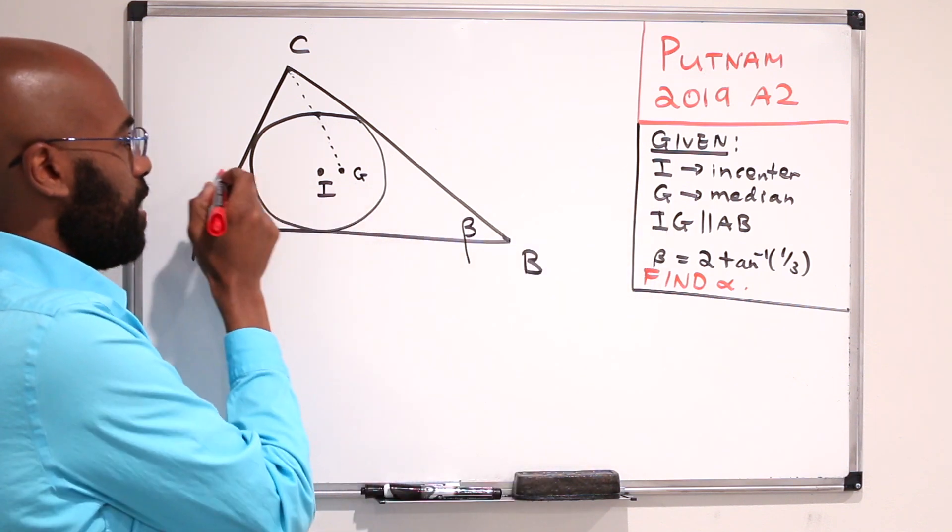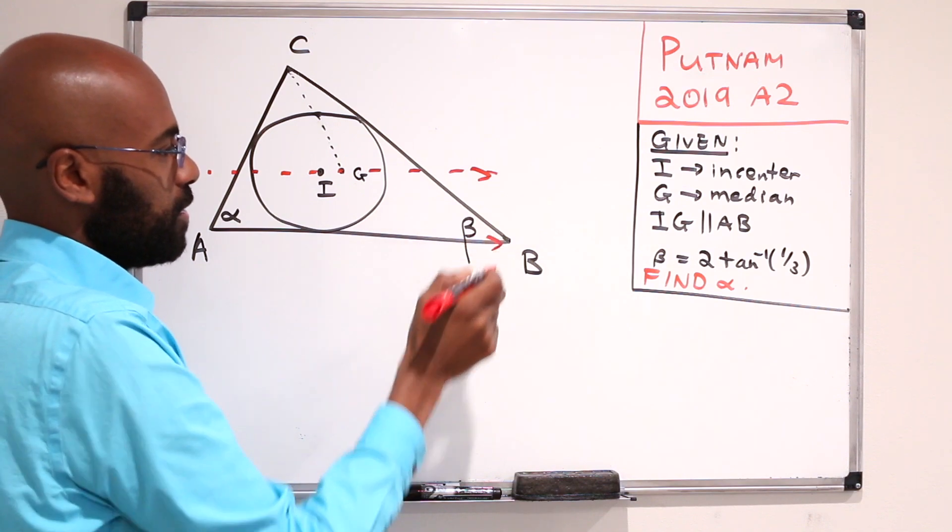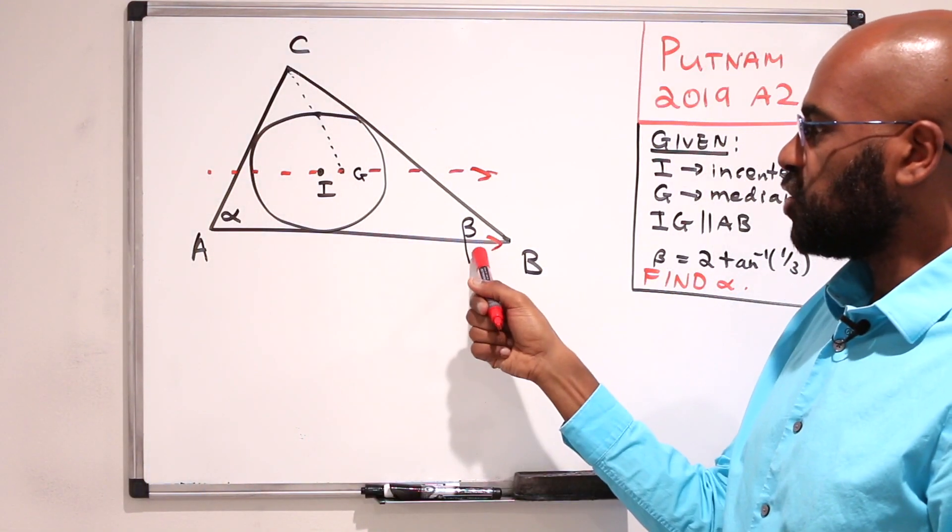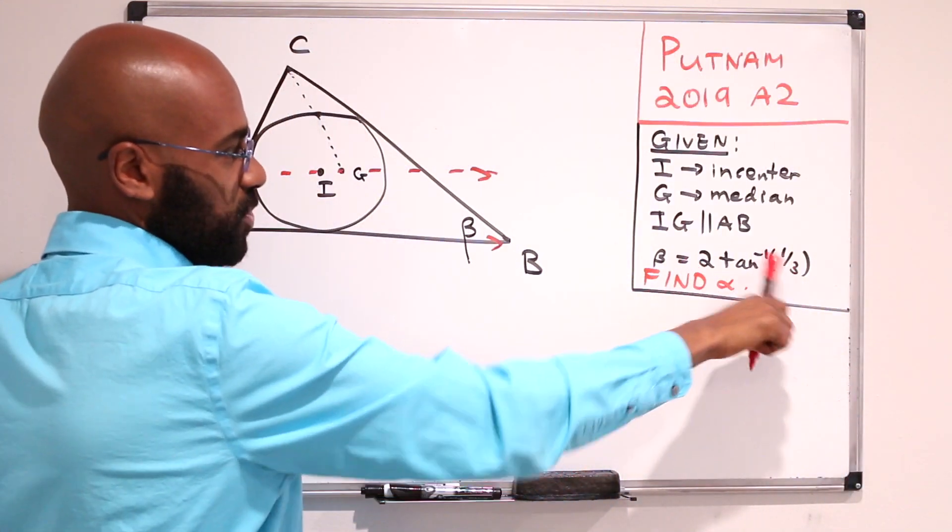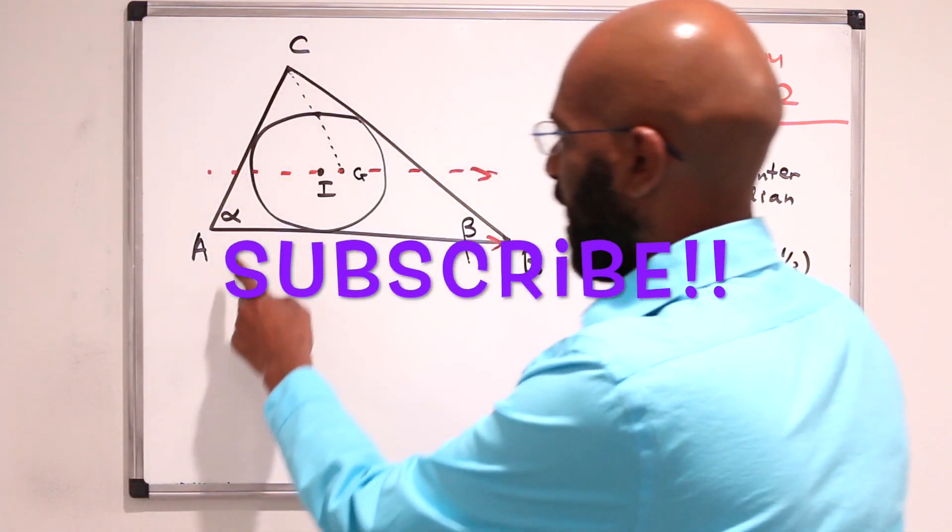And you're given this information that IG is actually parallel to the base AB. And then finally you're given information about this angle beta, that beta is twice the inverse tangent of one-third, and the question asks you to determine what alpha is.